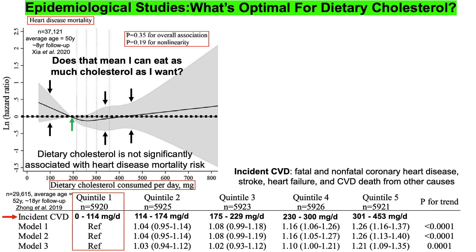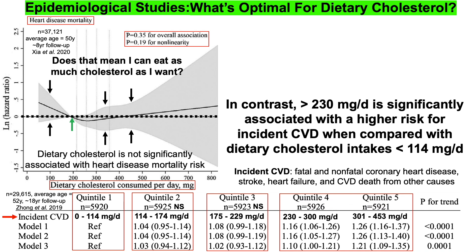When compared with the reference, defined as low cholesterol intake of less than 114 milligrams per day, quintile 2 and quintile 3 were not significantly different. This suggests that dietary cholesterol intakes from 114 to 229 milligrams per day are not significantly different in terms of CVD-related outcomes compared with lower intake. In contrast, quintile 4 and quintile 5 showed statistical significance — confidence intervals at one or higher — so more than 230 milligrams per day is associated with a higher risk for incident CVD compared with intakes less than 114 milligrams per day.